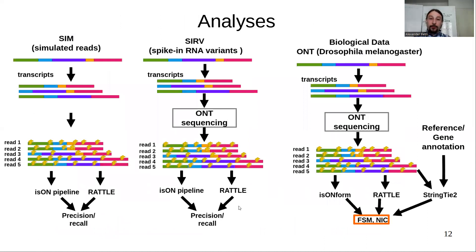We also performed another analysis on the SURF dataset. For 100,000 SURF reads, IsoNForm was able to find 62 of the 63 transcripts in the data, while RATTLE was only able to find 19 of the 63 transcripts.